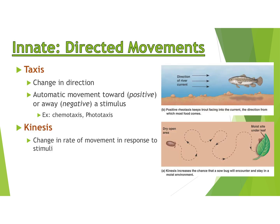Two more specific examples of innate behavior are directed movements: taxis and kinesis. Taxis is when an animal changes direction — either positive (towards) or negative (away from) a stimulus. For example, a fish facing the current because that's where food comes from. There are many types: chemotaxis is towards or away from chemicals, phototaxis is towards or away from light, and there are also responses to gravity. So taxis is a change in direction.